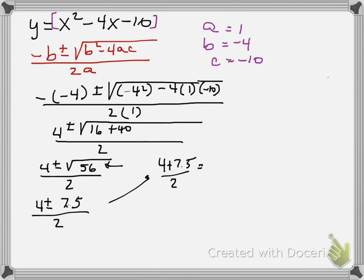which is 5.74. And the other is 4 minus 7.5 over 2, which is negative 1.74.